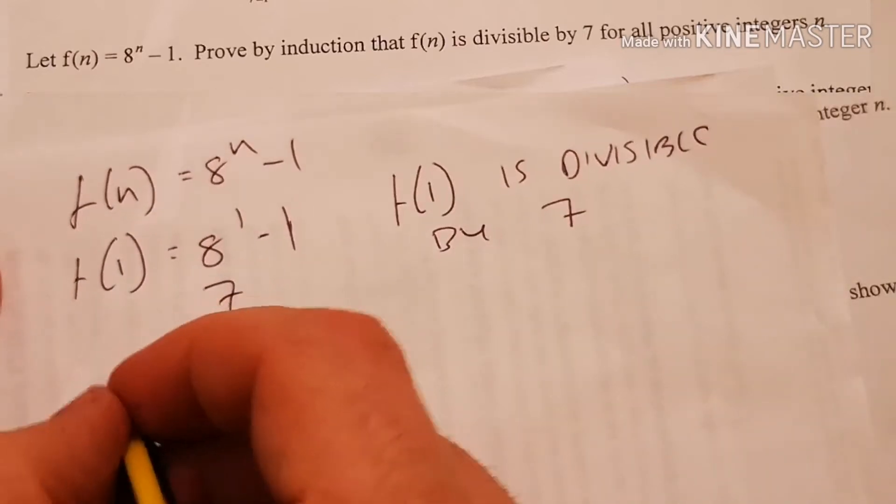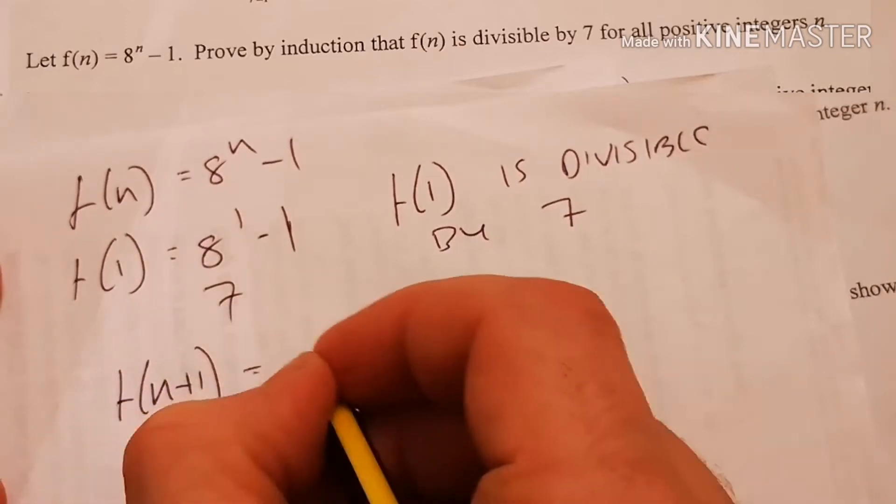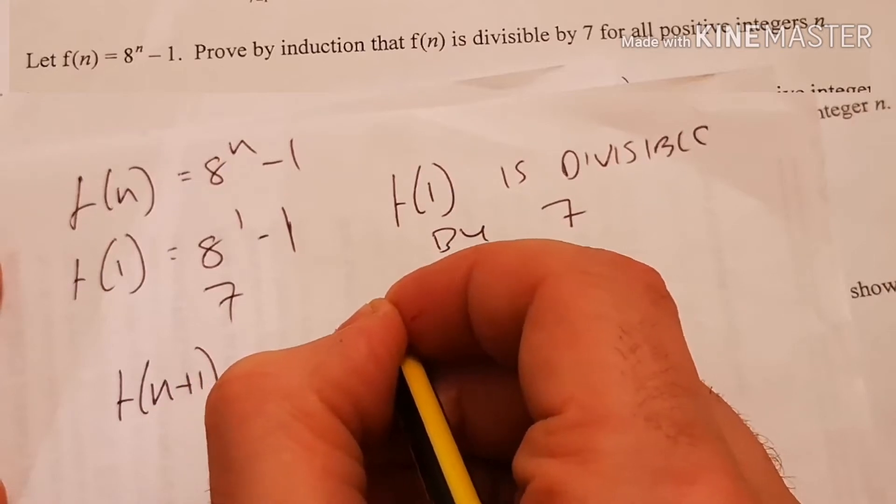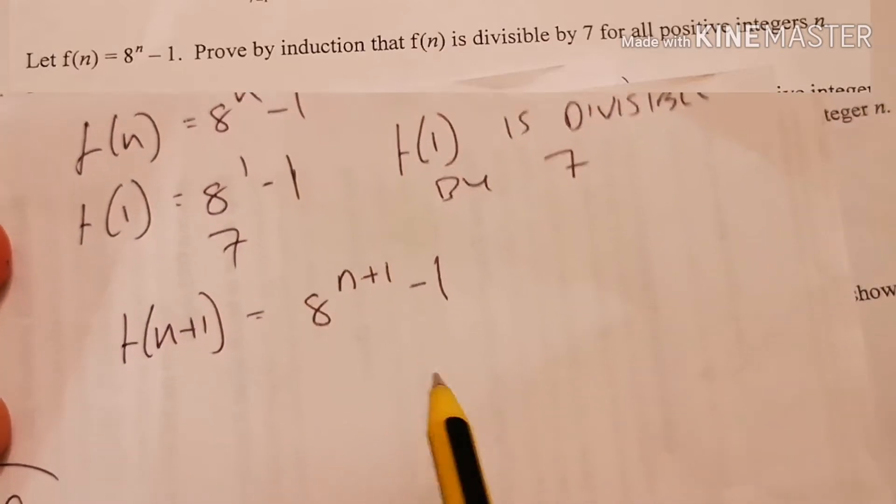Now what I want to do is check n plus 1, so it's going to be 8^(n+1) minus 1. I'm going to assume that's divisible by 7.